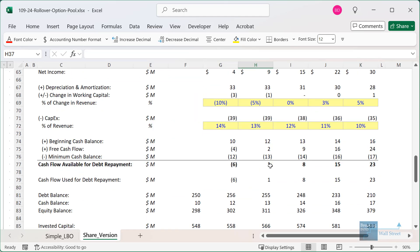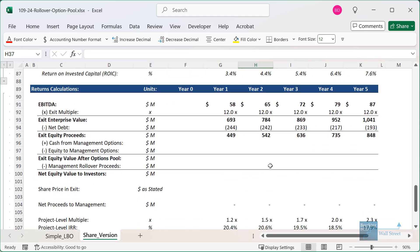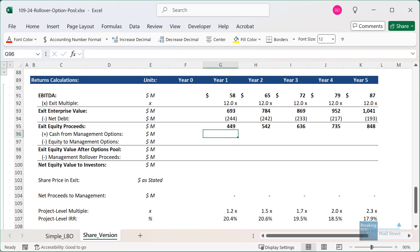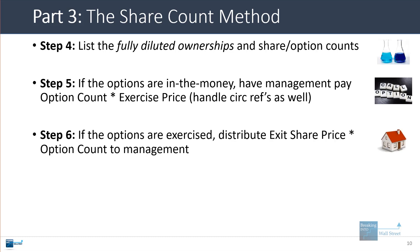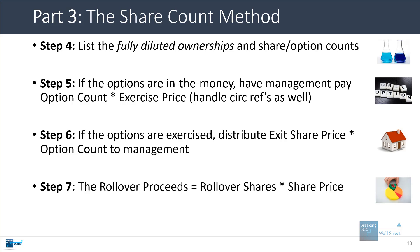For the exit calculations, the basic idea is: if the options are in the money, management pays the option count times the exercise price — and we have to think about circular references here. If options are exercised, we distribute the exit share price times the option count to management. The rollover proceeds are based on the rollover share count times the share price.